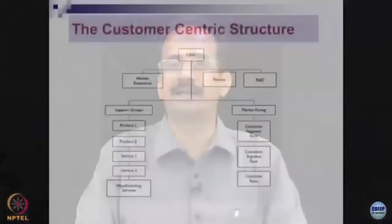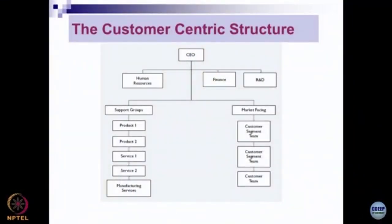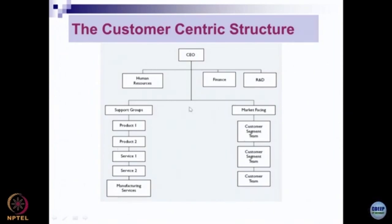The next structure is called customer-centric structure. Looking at the diagram, the CEO is reported to by one market-facing group and a support group, along with finance, R&D, and human resources. A significant portion of the organization is customer-facing, responsible for a specific customer segment, while another group is responsible for different products and services. At the corporate level, there are HR, finance, and R&D functions.